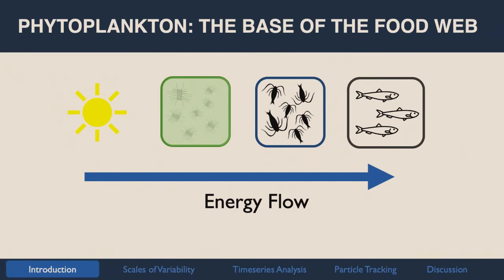I want to start by getting everyone on the same page thinking about phytoplankton. This is a gross oversimplification of the marine food web, but what I want to hammer home is the importance of phytoplankton at the base of the food chain through photosynthesis — the fixing of carbon dioxide into complex carbohydrates and harvesting energy from the sun, which works its way up the trophic levels. That eventually affects us directly as it makes its way up to things we as humans eat or are generally interested in.